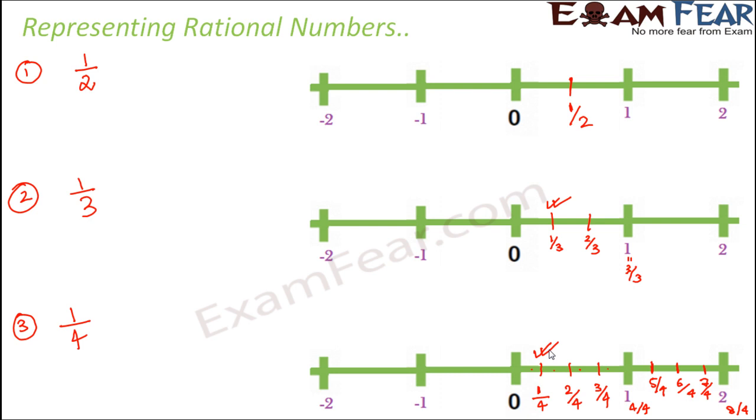1 by 2, 1 by 3, 2 by 3, 2 by 4, 3 by 4, 1 by 4. So there are so many numbers. Not only these, but actually there are many more rational numbers that exist between these two numbers. Not only these two numbers, but between any two integers there exists a huge number of rational numbers.